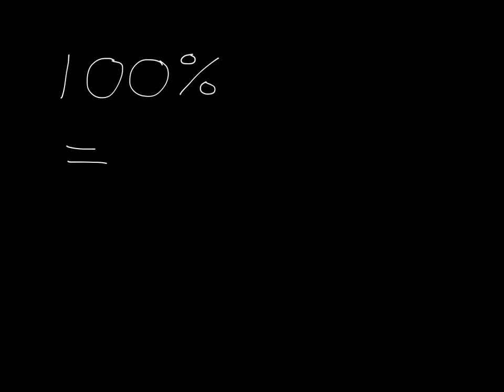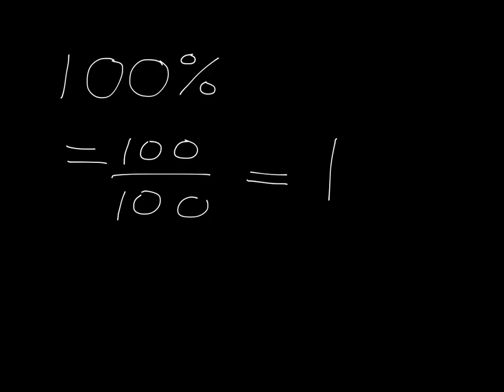Let's just see if we can write 100 percent as a fraction and then as a number. It looks a bit funny but it follows the same pattern: 3 percent is 3 over 100, 25 percent is 25 over 100, 70 percent is 70 over 100 — so 100 percent must be 100 over 100. And what is 100 over 100? We divide top and bottom by 100 to get 1 over 1, which is just 1. So 100 percent written as a number is just 1.